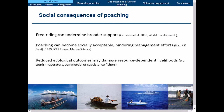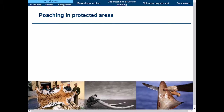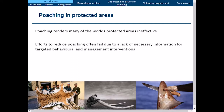Poaching renders many of the world's protected areas — both terrestrial and marine — ineffective. A lot of times efforts to reduce poaching fail because they lack the necessary information for targeted behavioral and management interventions. That brings me to the overall problem this thesis addresses: gathering information on poaching is incredibly difficult. It's illegal, it's cryptic or clandestine in nature, and it's often socially undesirable.